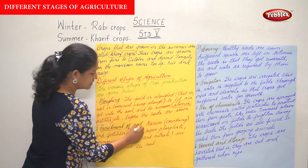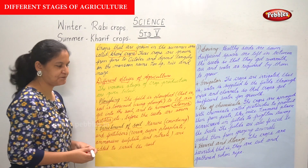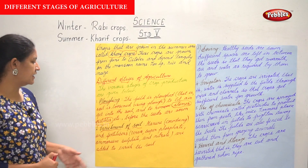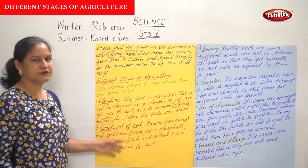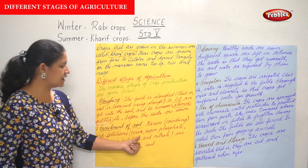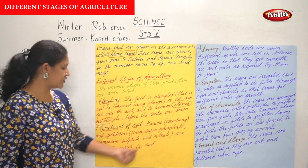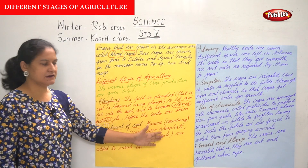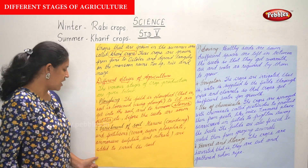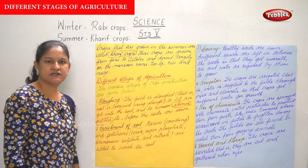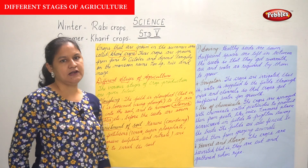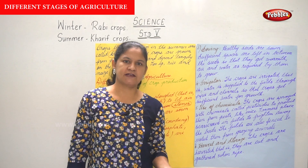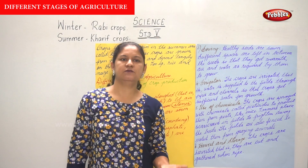The next stage is enrichment of soil. Manure — that is cow dung — and fertilizers like urea, super phosphate, ammonium sulphate, and nitrate are added to enrich the soil.